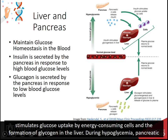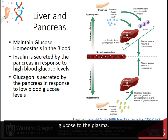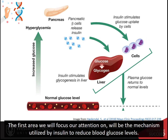During hypoglycemia, pancreatic alpha cells release glucagon, which stimulates gluconeogenesis and glycogenolysis in the liver and the release of glucose into the plasma. The first area we will focus our attention on will be the mechanism utilized by insulin to reduce blood glucose levels.